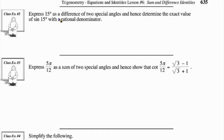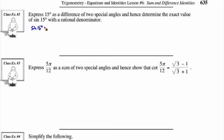Let's take a look at class example number two and express 15 degrees as a difference of two special angles, and hence determine the exact value of sine 15 degrees with a rational denominator. Since we're looking for sine of 15 degrees, we want two special angles whose difference is 15. I'm going to choose 45 and 30, because 45 degrees minus 30 degrees is 15 degrees.